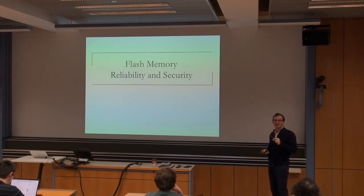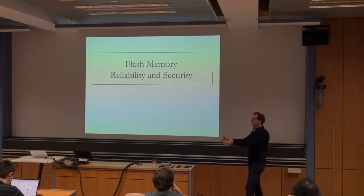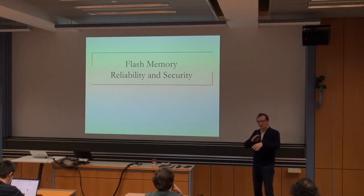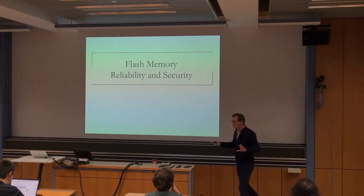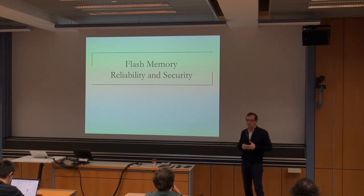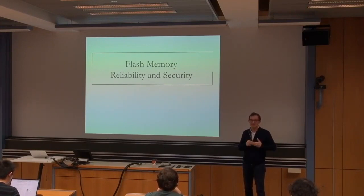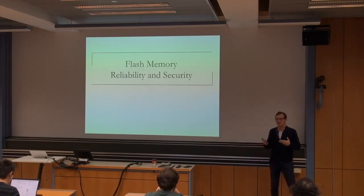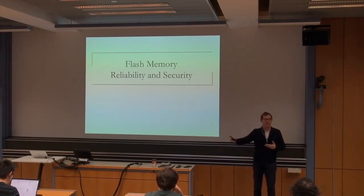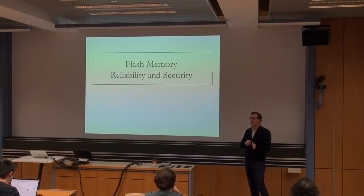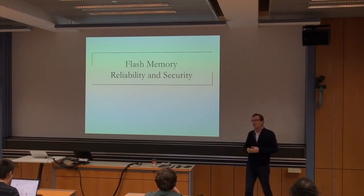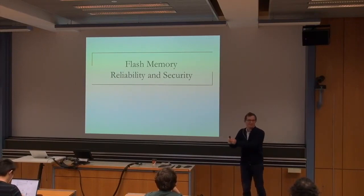Flash controllers maintain a logical block address (LBA) to physical block address mapping table — the flash translation layer (FTL). Blocks can be in one of three states: erased (available), open for writing (currently being written), or populated (valid data). When you want to modify a page, you read it, modify one or more bits, and write it to the next available physical page in the open block. The FTL remaps that logical address to the new physical location, and the old location becomes an invalid, obsolete page.